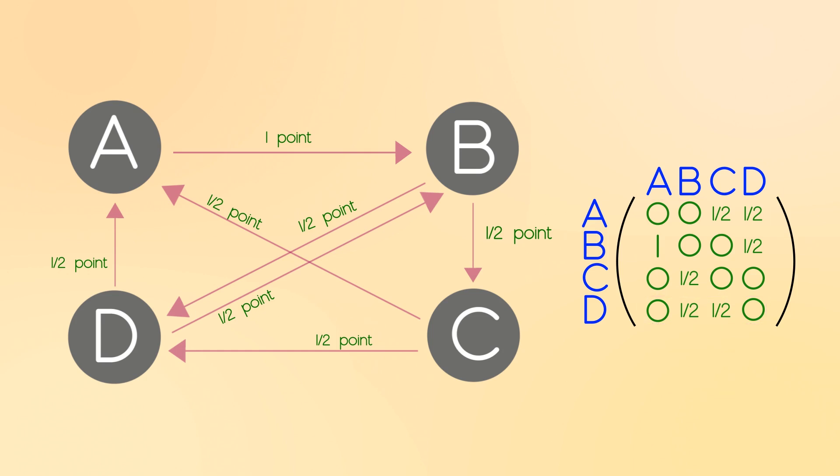Now, the reason we picked one importance point to be given out in total is because these numbers now represent probabilities. Like if I go to website A and randomly click a link, there's a 100% chance, or a decimal value of 1, that I will land on website B because of that one link. Once I'm at website B, if I randomly click a link, I have a 50% chance of going to C and a 50% chance of going to D, and this will just continue from there.